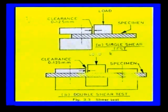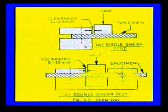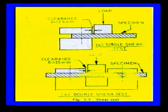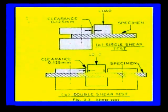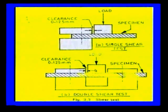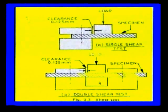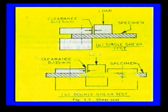The first figure shows the single shear, where the work piece specimen is fixed between two jaws and the load is applied with a small clearance, and the corresponding shear area is calculated. In double shear, the work piece is fixed between two jaws and the load is applied. In both single shear and double shear cases, the amount of shear stress and shear strain is calculated and a corresponding graph is developed.